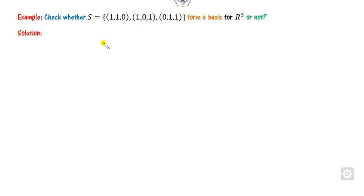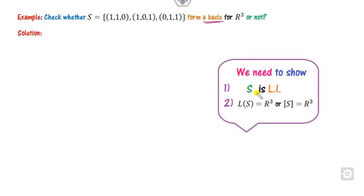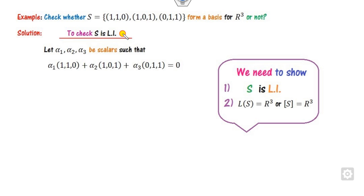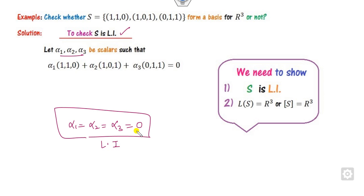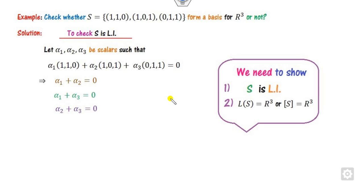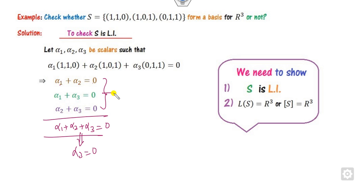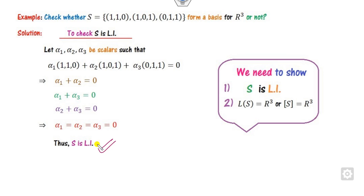There are two methods for finding whether it is a basis or not. The first method is quite lengthy. To show it is a basis, you have to show two things. First, check whether the set is LI by taking a linear combination and checking if all alpha coefficients are zero. If you add the equations, alpha 1 plus alpha 2 is 0, then alpha 3 is 0, alpha 2 is 0, and similarly alpha 1 is 0 — so it is LI.